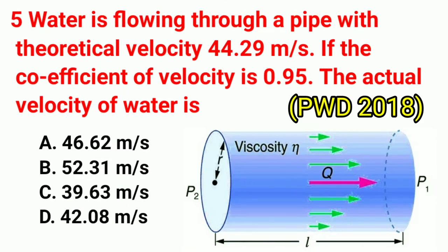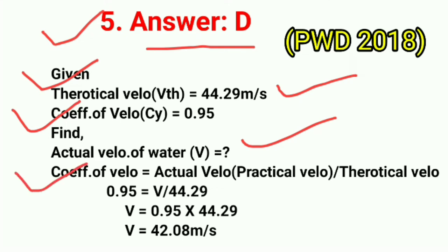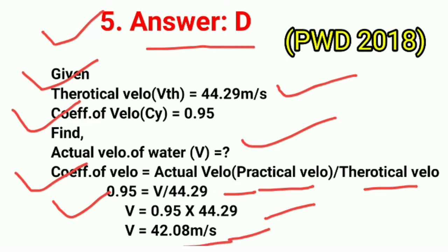Question No. 5. Water is flowing through a pipe with theoretical velocity 44.29 m/s. If the coefficient of velocity is 0.95, the actual velocity of water is? Correct answer option D: 42.08 m/s. Given: theoretical velocity = 44.29 m/s, coefficient of velocity = 0.95. Using the formula: coefficient of velocity = actual velocity / theoretical velocity. So V = 0.95 × 44.29 = 42.08 m/s.